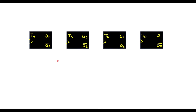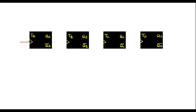Since we are implementing a 4-bit counter we need 4 T flip-flops: TA, TB, TC, and TD. The clock pulse is given to the TA flip-flop since this is the LSB flip-flop. All the T inputs — TA, TB, TC, and TD — are connected to logic 1.